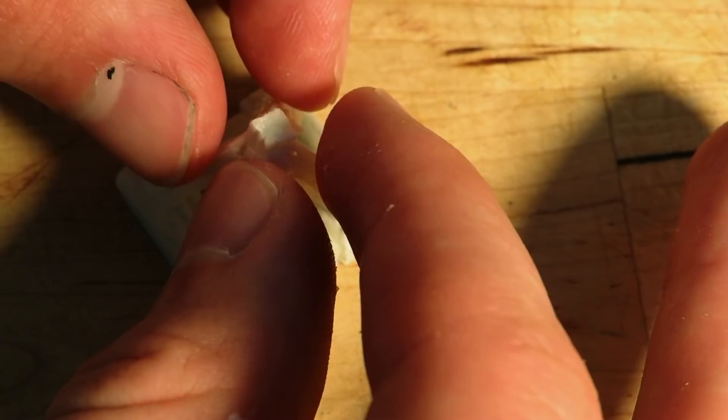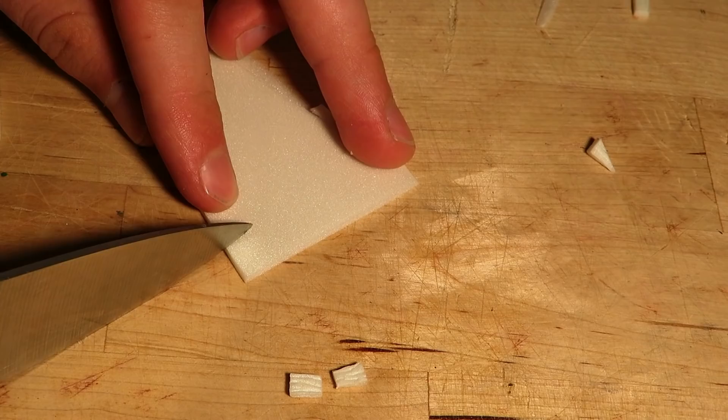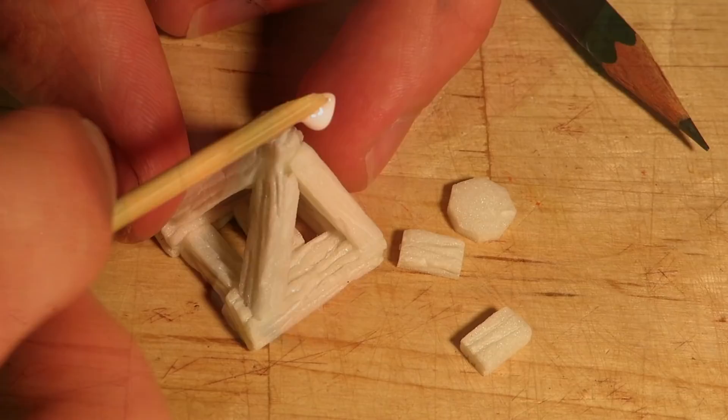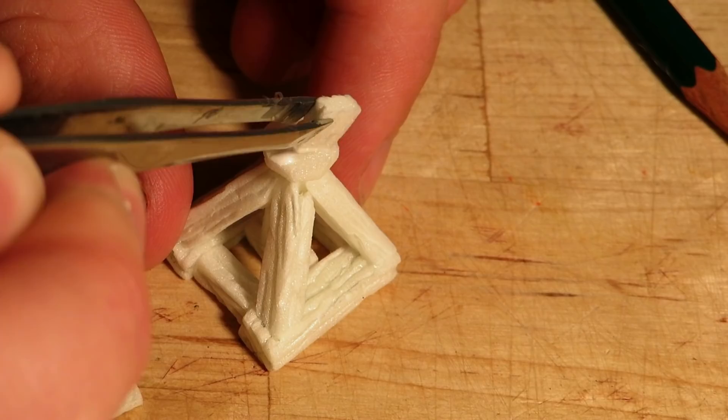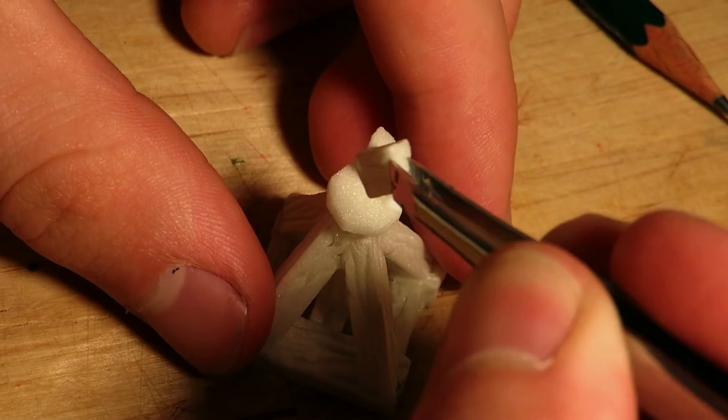Now I will make the part that the ballista will be attached to. I cut out an octagonal disc, which I will paint to be metallic. I glued it on top and then attached small plank pieces. I made sure that the gap between the plank pieces was wide enough for the stock of the ballista.